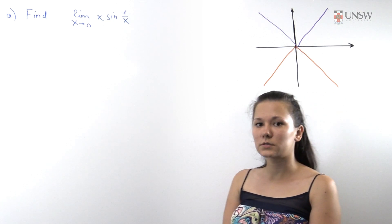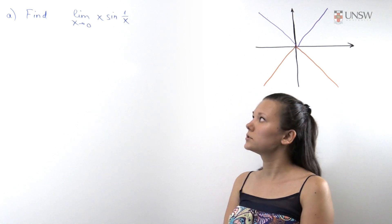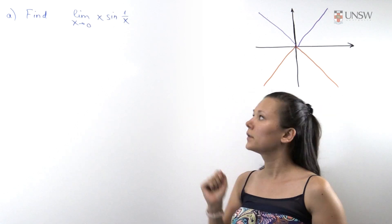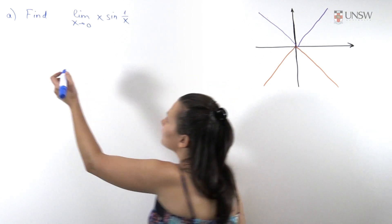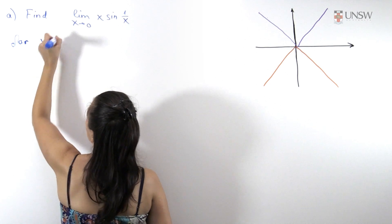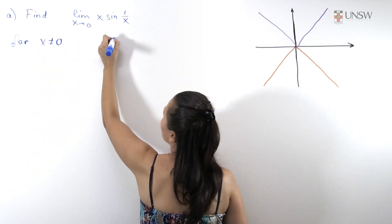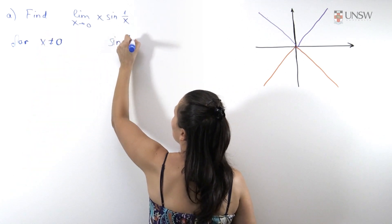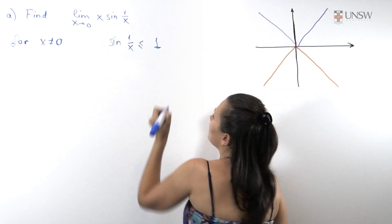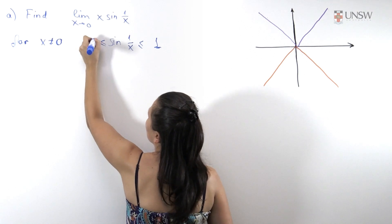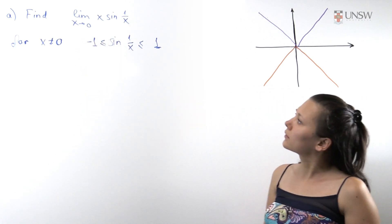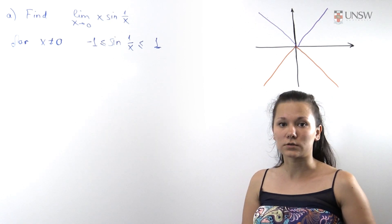When we need to use the pinching theorem we always need to estimate our function from above and from below. In our case, for x's which are not equal to 0, we always have that sine 1 over x is smaller than 1 and bigger than minus 1. This inequality holds for all non-zero x.